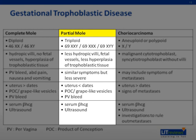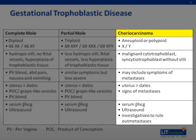An incomplete hydatidiform mole, also known as a partial mole, comprises a triploid karyotype of 69XXY, 69XXX, or 69XYY. Histology reveals less hydropic villi with some fetal vessels and less hyperplasia of trophoblastic tissue. Patients usually present with similar complaints, but examination typically shows the uterus smaller than dates. Choriocarcinoma are malignant hydatidiform moles, which are aneuploid, comprised of an X or Y chromosome. Histology typically shows malignant cytotrophoblast and syncytiotrophoblast without villi.